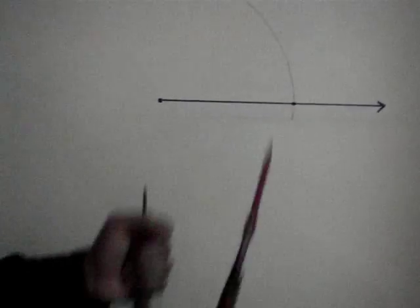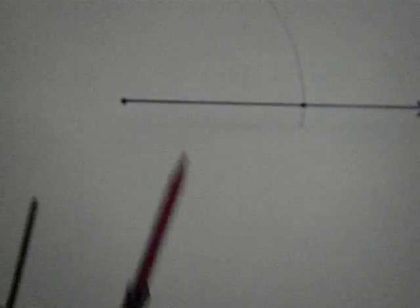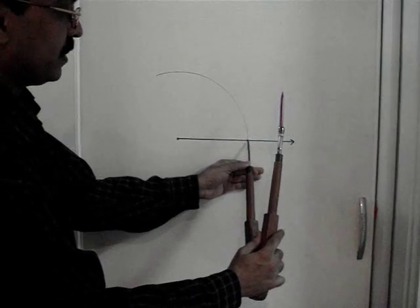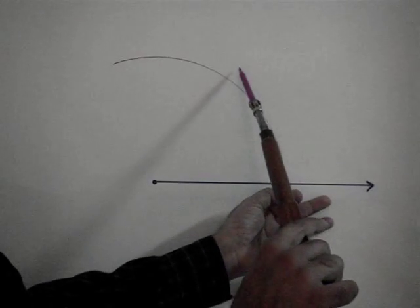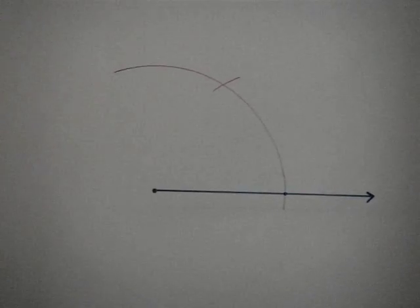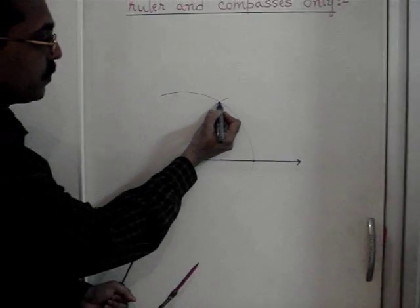Now, without disturbing the radius which we have taken previously, keeping the compass at this intersection point, we intersect the previously drawn arc like this. So we got another intersection point here.